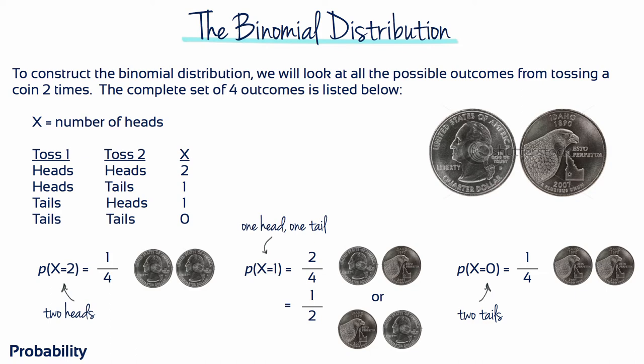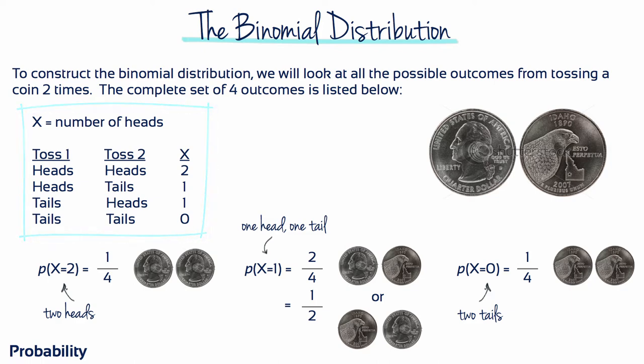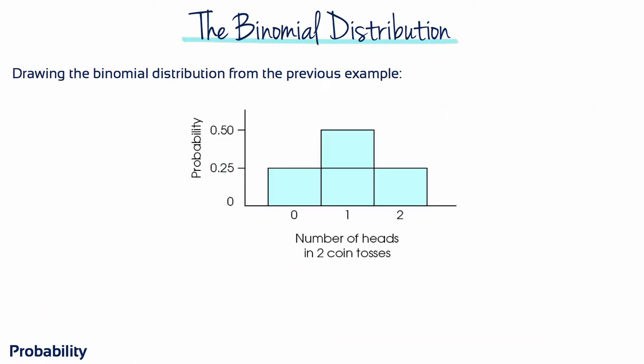To construct a binomial distribution, we'll look at all the possible outcomes from tossing a coin twice. The complete set of four outcomes is listed below. The probability of getting two heads is 1 in 4, while the probability of getting one head and one tail is 1 in 2, and the probability of getting two tails is 1 in 4. Drawing the binomial distribution from this example, we get this figure.